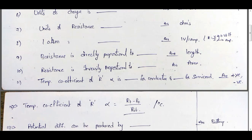The resistance is directly proportional to the length of the wire and inversely proportional to the area of the wire. We know that R equal to rho L by A, meaning R is directly proportional to length and inversely proportional to area.